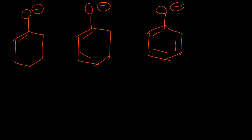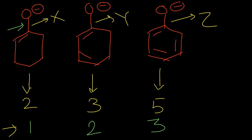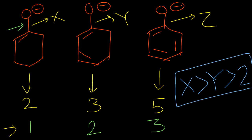A similar question follows: in one case we have two resonating structures, in another three, and in another five. Out of two, one has double bond between carbon and oxygen; out of three, two have C=O double bond; and out of five, three have double bond. So more resonating structures having double bond character means smaller bond length. Thus X > Y > Z for bond length.